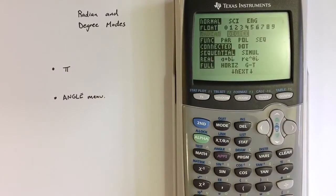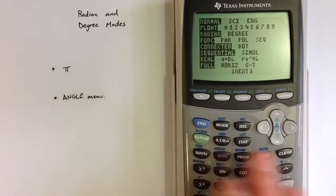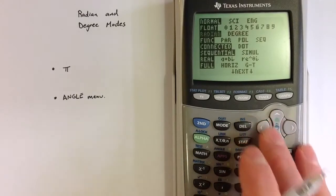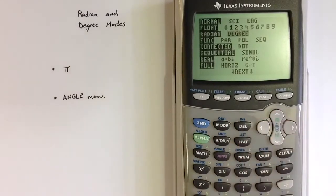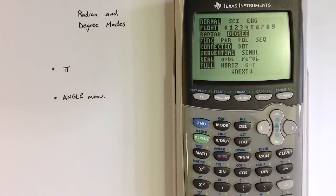In radian mode, the default measure becomes radians. To access radian mode, we can use the arrow keys to move the cursor over radians, and then hitting enter changes the option.